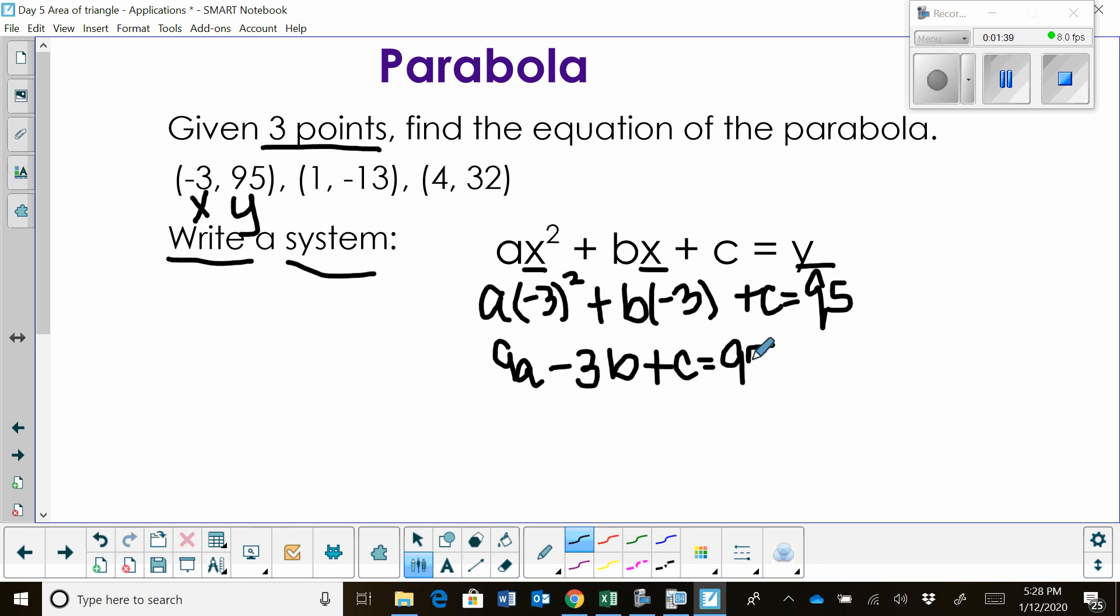Okay, and that's our first equation. We're going to do the same thing with 1 and -13. Well, 1 is easy because 1² is 1 and plug in 1, so really the second equation is simple. It's just a + b + c, because we're plugging in 1, is equal to -13.